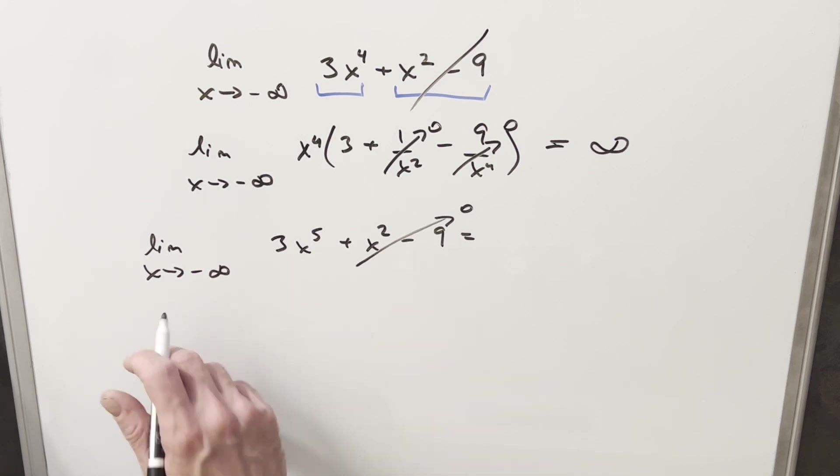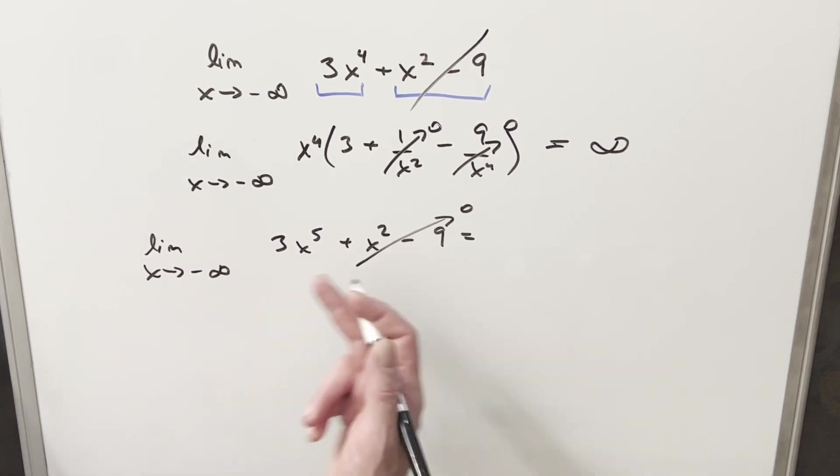So you just think if you have a large negative number, it doesn't matter that it's infinity. You just think if this is a large negative number and you have it to an odd power, it's going to be a negative number, so this is going to actually be going to negative infinity.